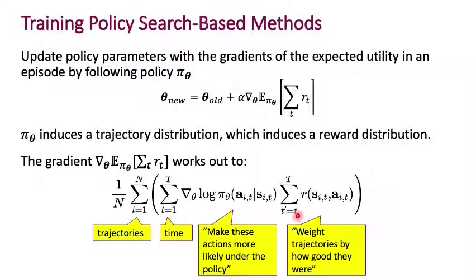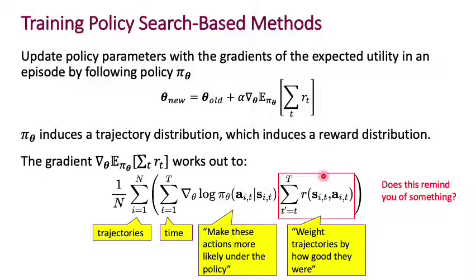Each action is weighted by the rest of the trajectory after you executed it — the summation from time step t till the end of the episode of the rewards at the next few time steps. This tells us we are trying to make the actions that were good more likely under the policy. This term is essentially just a value function. Note that on this slide we've ignored the discount factor to keep things simple, but these ideas continue to hold in the presence of a discount factor.